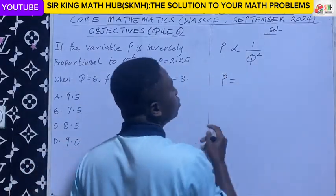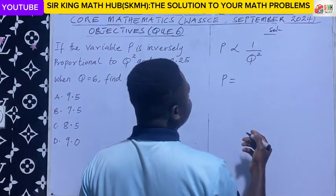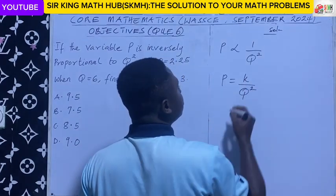It becomes p is equal to - so we introduce the constant of proportionality. I'm representing that as k. So k on k o squared.